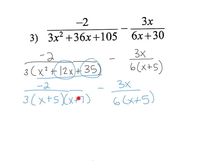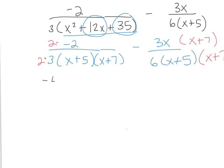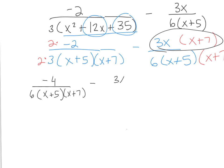So now I need to get a common denominator. I have a 3, an x plus 5, and an x plus 7 on one side, and a 6 and an x plus 5 on the other. So I need a 6, meaning I multiply the numerator and denominator by 2, and then I need an x plus 7 on the other side. So this expression turns into negative 4 times 6 times x plus 5 times x plus 7, minus 3x squared plus 21x, over 6 times x plus 5 times x plus 7.